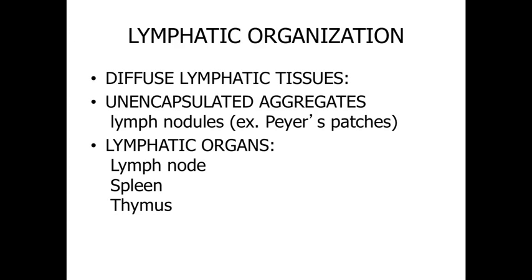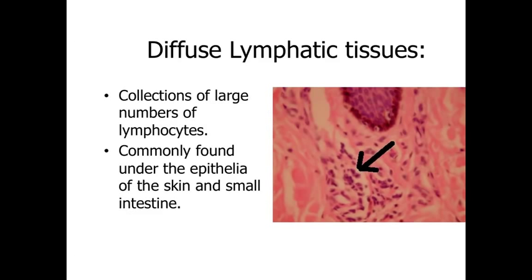This is going to range from diffuse lymphatic tissues — essentially our migrating lymphocytes throughout the body, which have a tendency to accumulate in certain locations — to a series of unencapsulated aggregates, essentially clusters of lymphatic cells and tissues like lymph nodules and Peyer's patches within the intestines, as well as distinct lymphatic organs such as the lymph node, the spleen, and the thymus. We're going to start at the simplest level and move up to the more complex structures.